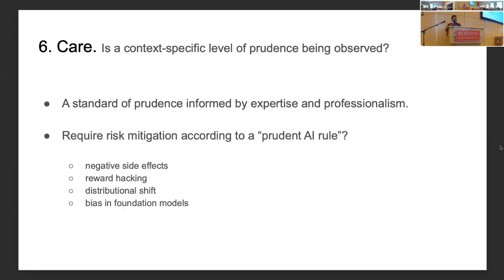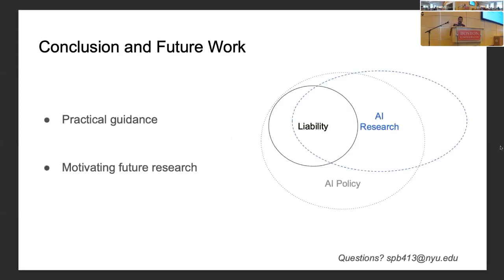Step six is the duty of care — the application of care to AI, a standard of prudence informed by expertise and professionalism that is domain-specific. This is where we can have something like a prudent AI rule that incorporates known AI risks: negative side effects, reward hacking, distributional bias, and problems with foundation models, all bundled into a prudent AI rule before AI is deployed across many different domains. In summary, we aim to provide practical guidance for future applications, motivate and structure future research by mapping AI risk research into categories of legal liability, sharpen discourse around what AI regulation ought to be, and inform AI policy going forward.